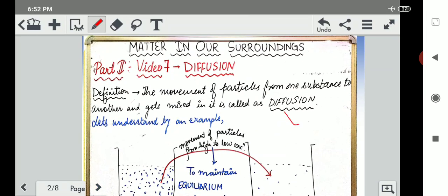Now what is diffusion? The movement of particles from one substance to another and then getting mixed into it is called diffusion. Supposedly there are two things and the particles move from one thing to another, getting mixed in it, that is called diffusion.